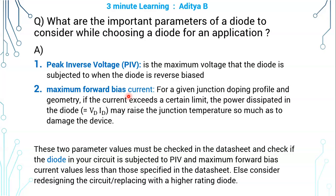If those conditions are not satisfied, you have two options: either redesign your circuit by changing external component values — such as resistor values or the voltage source — so that both conditions are met, or replace the diode with one that has a higher rating.